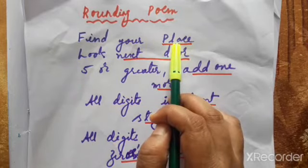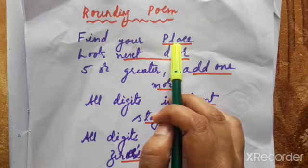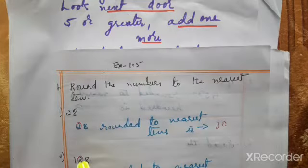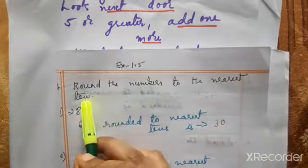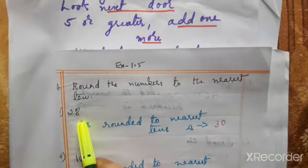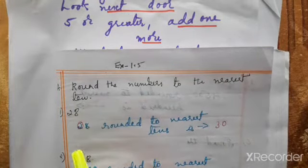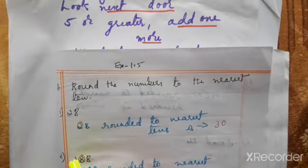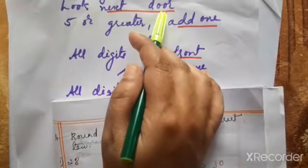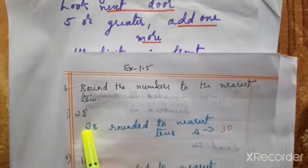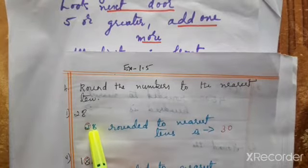Step one: Find your place — we have to find the place value in which we have to round the number. Since we need to round to the nearest 10, first mark the number in that place. Step two: Look next door — we have to check the next neighbor digit.